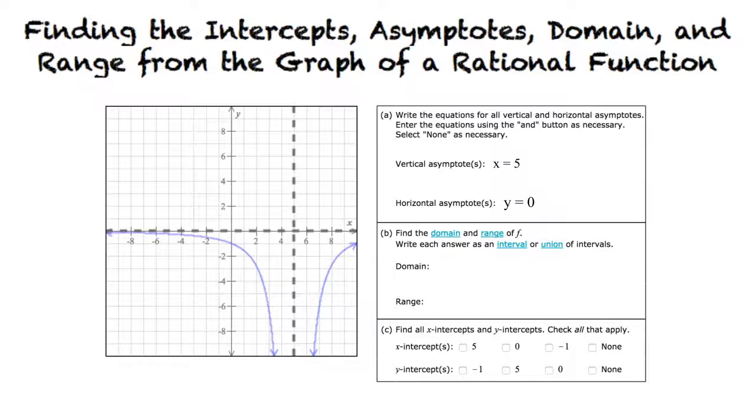Therefore, the numbers that appear as x-values of points on the graph make up the two intervals. So our two intervals would be negative infinity to 5, union 5 to infinity. Now let's try finding the range. Remember that the range is the set of all numbers that appear as y-coordinates of the points on the graph. So our range in this function would be negative infinity to 0.